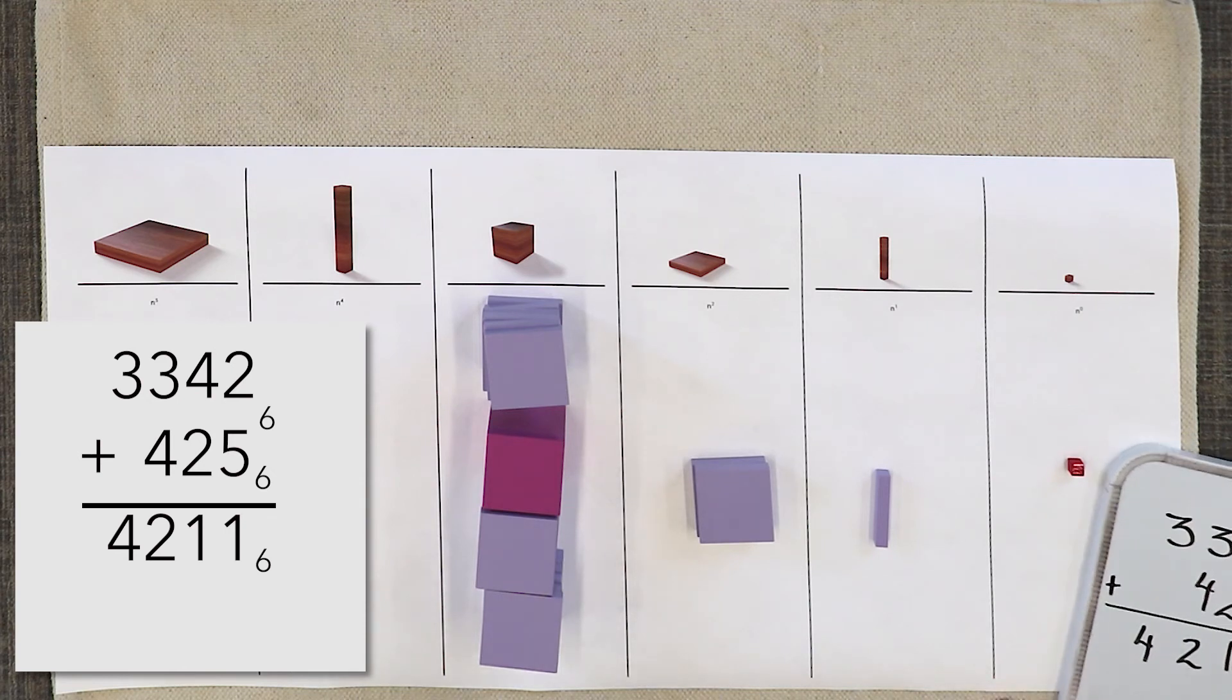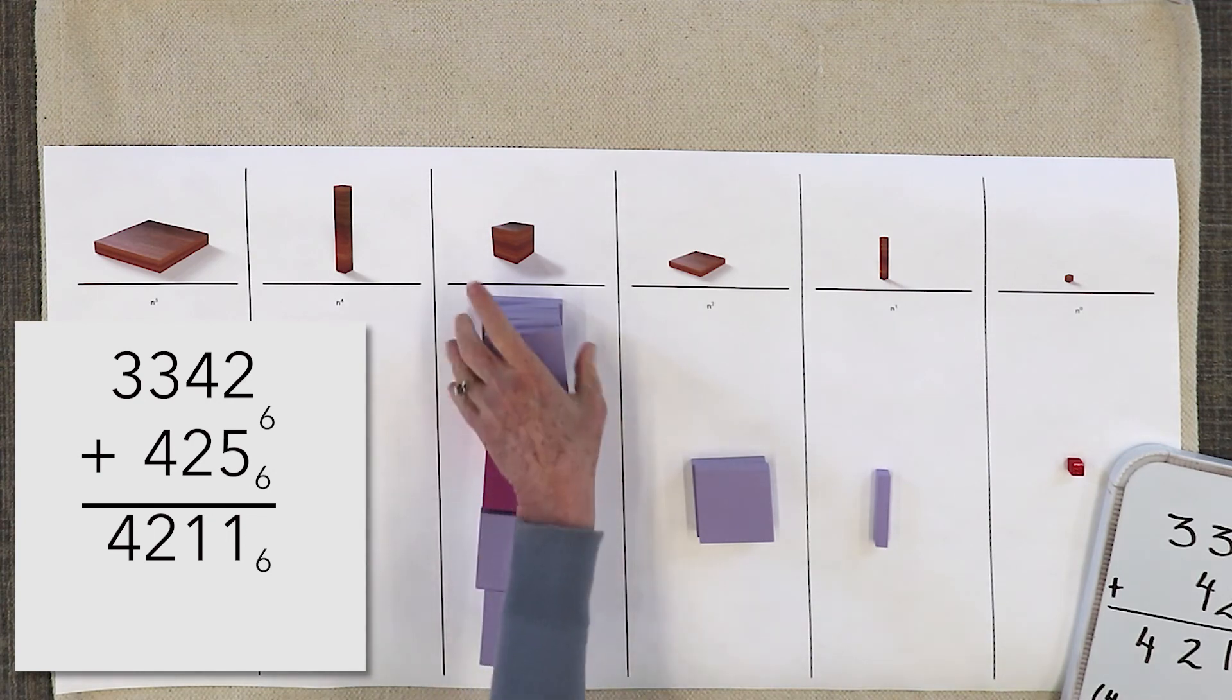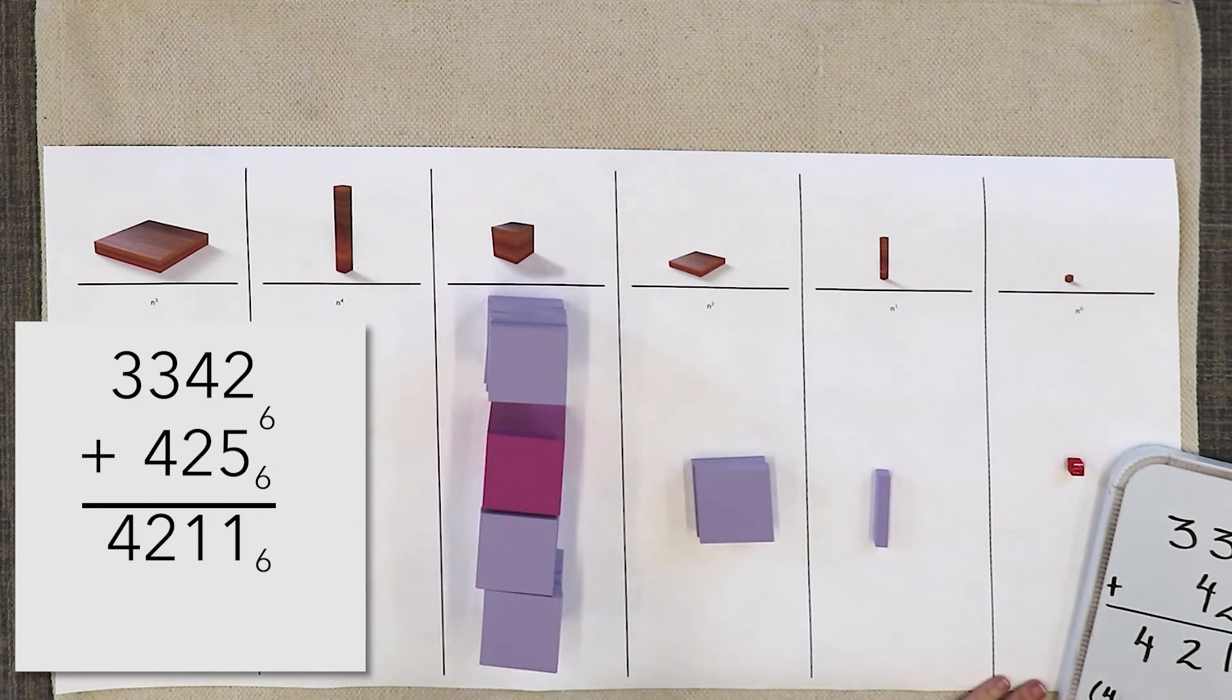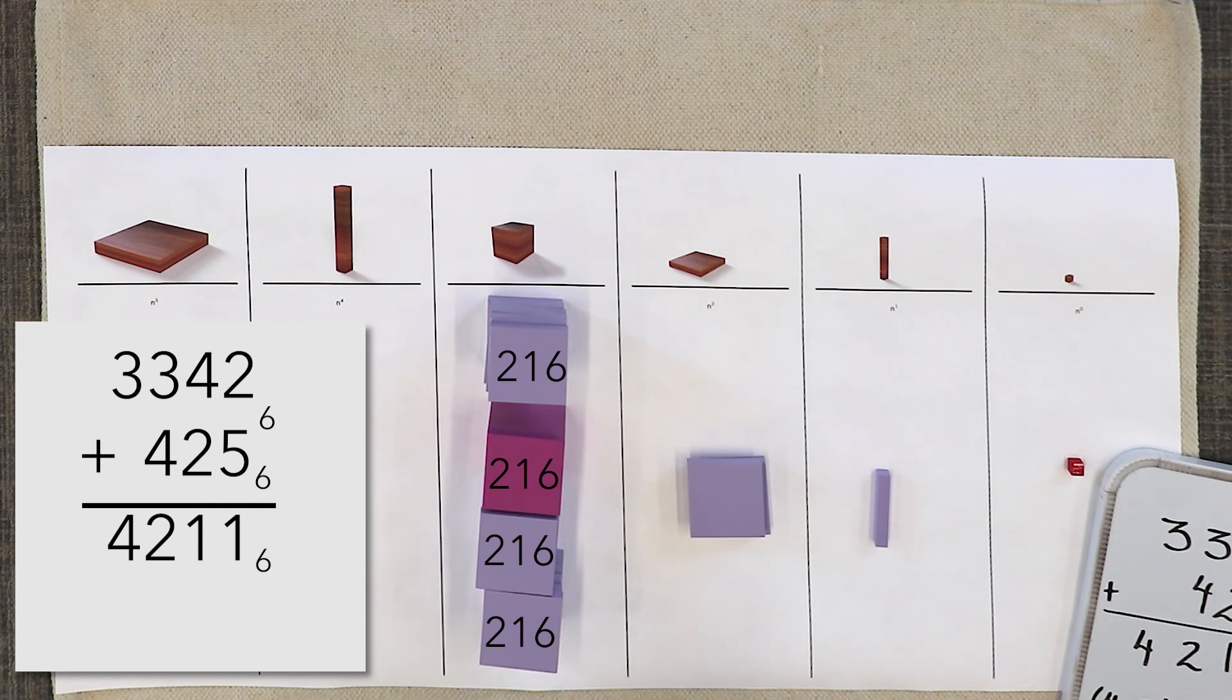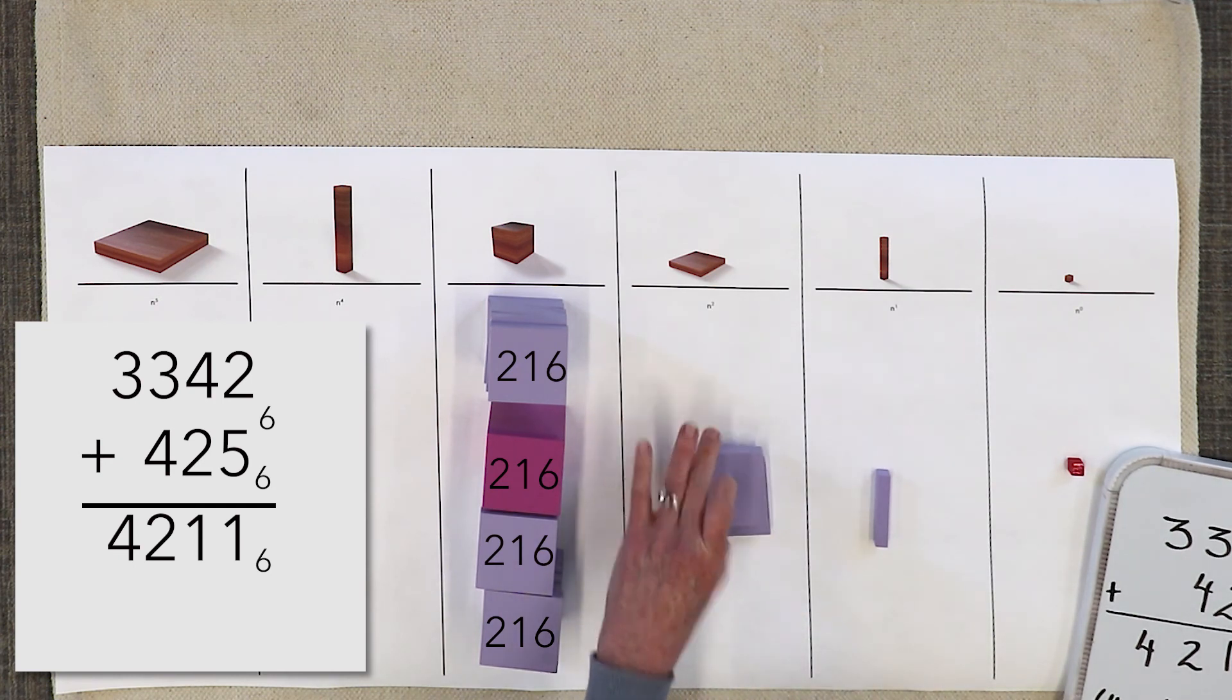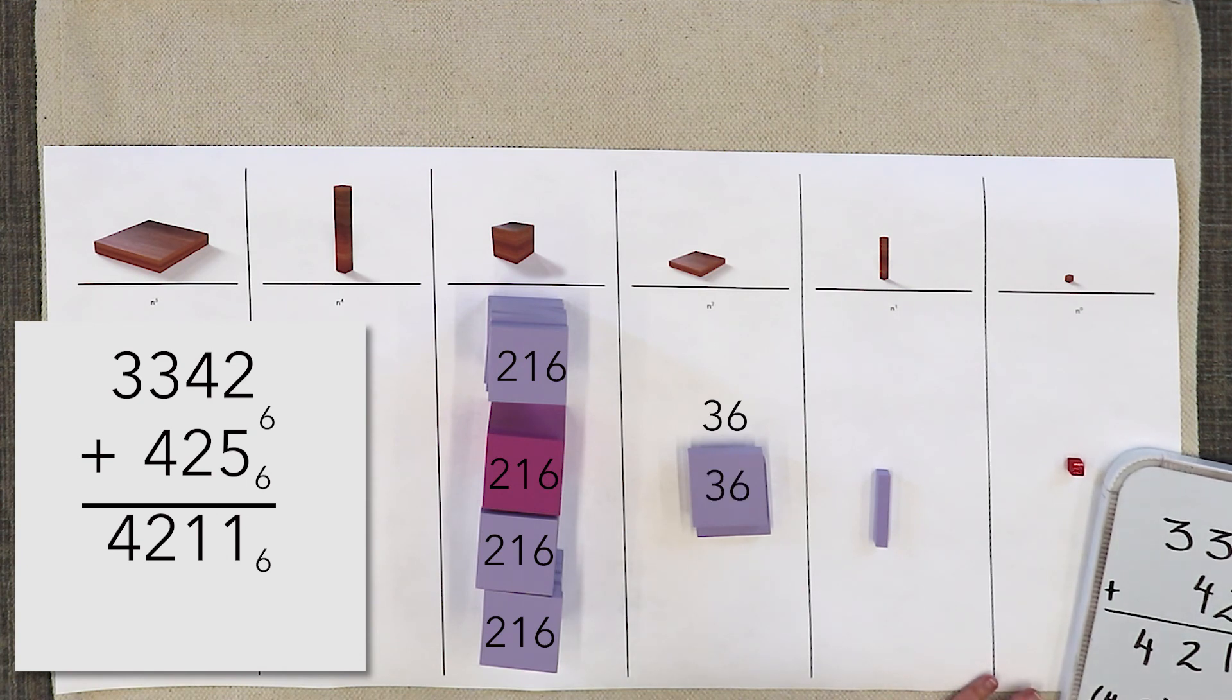What we have is four six cubes. A six cube is 216. Four times 216 plus two times six squared—and six squared is 36—plus one times six plus one.